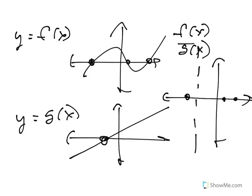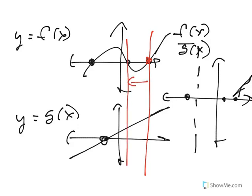Other than those key points, it gets a little complicated. To the right of a certain point, both f of x and g of x are positive, so the quotient will be positive. In between two other points, f of x is negative but g of x is positive, so dividing gives something negative. It gets a little difficult to analyze.